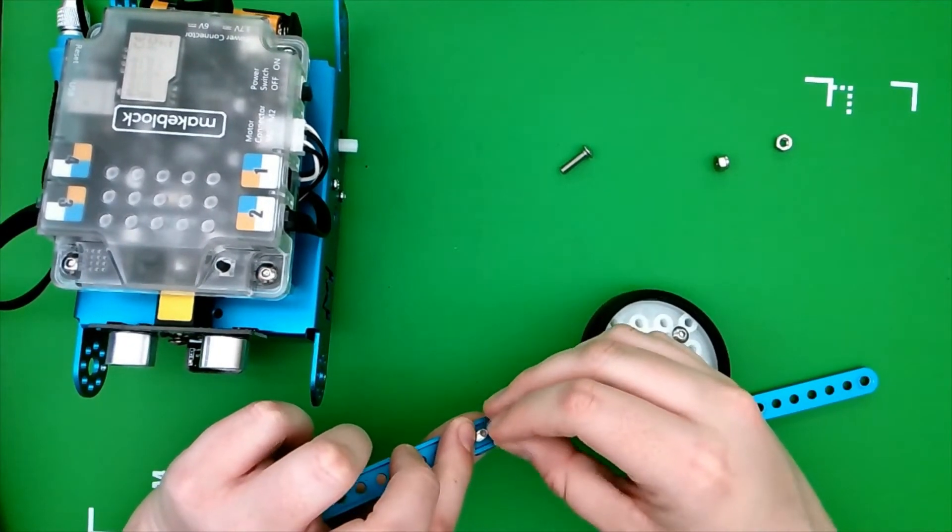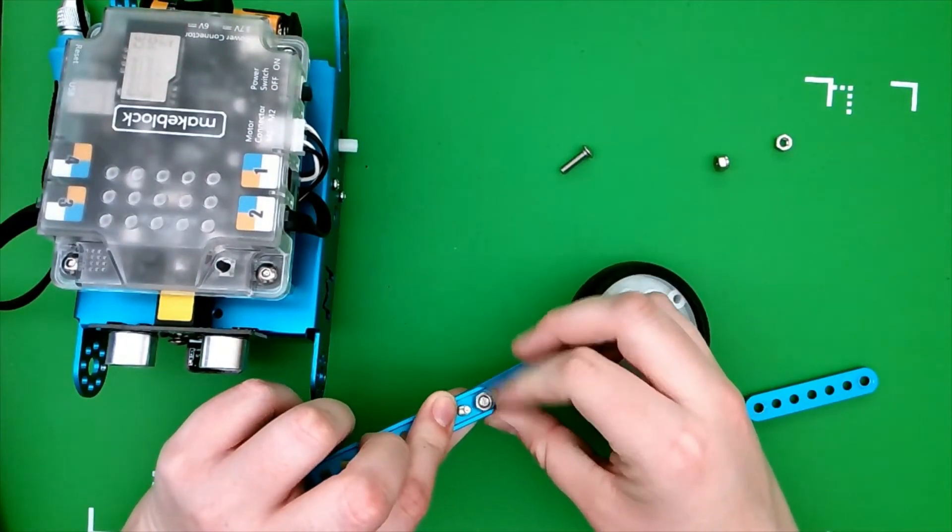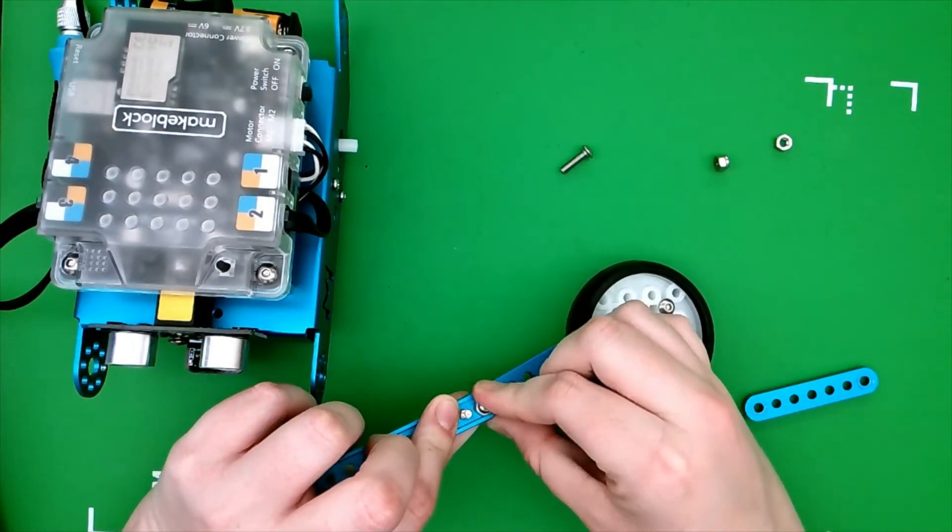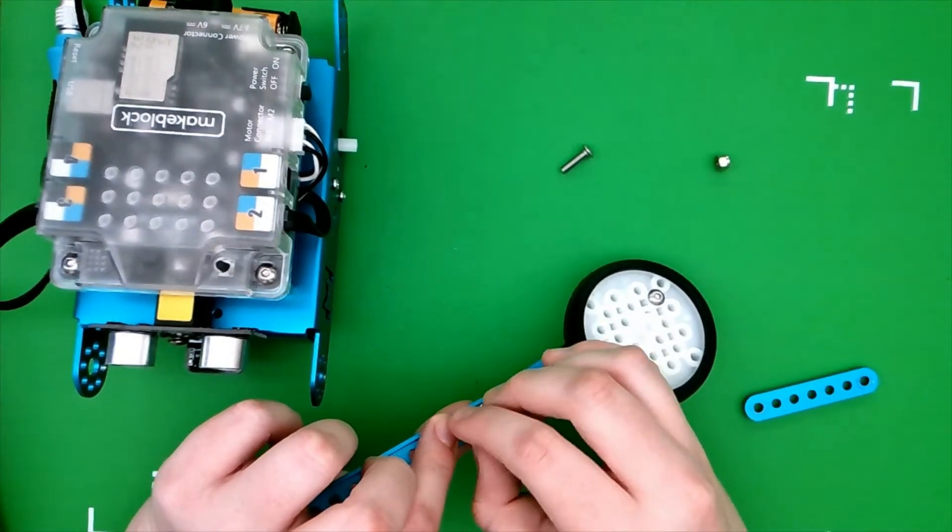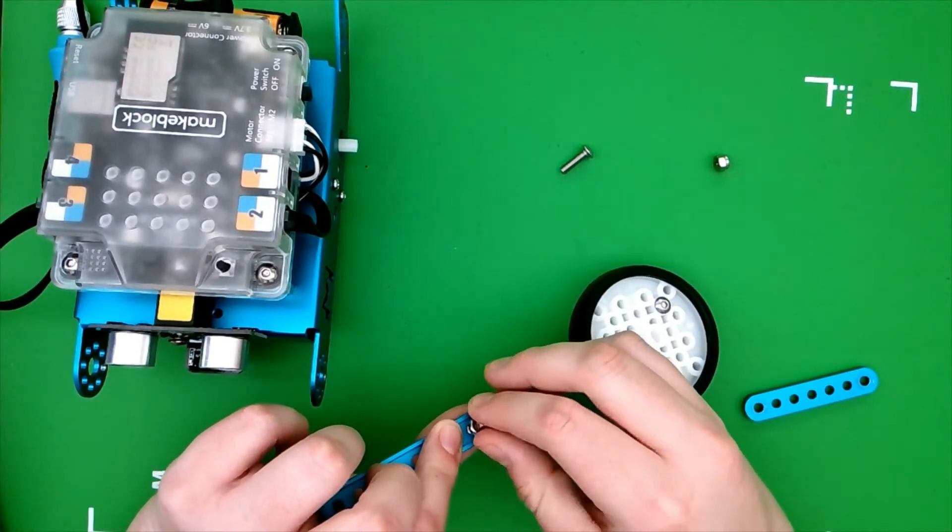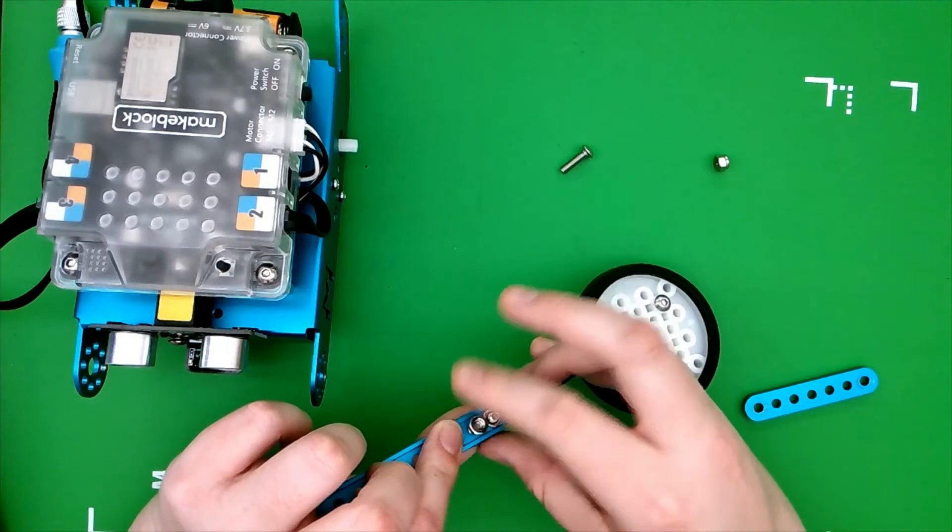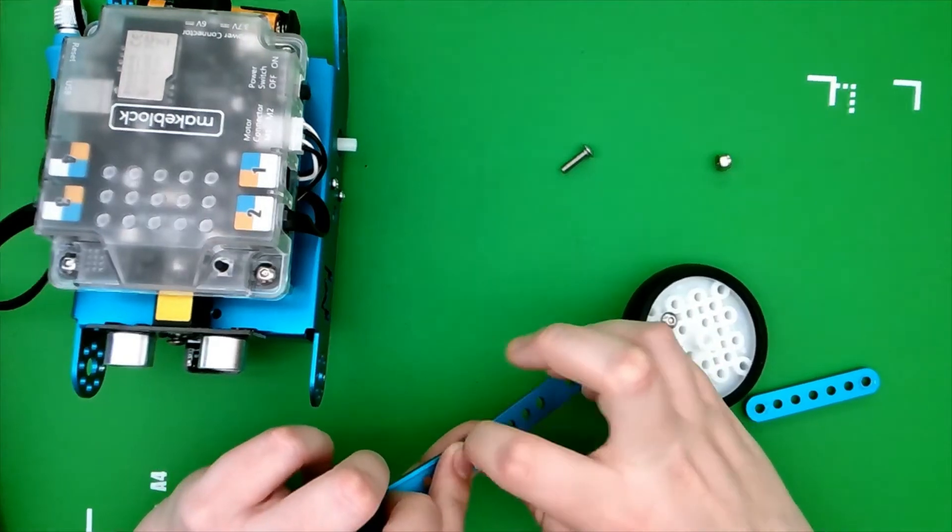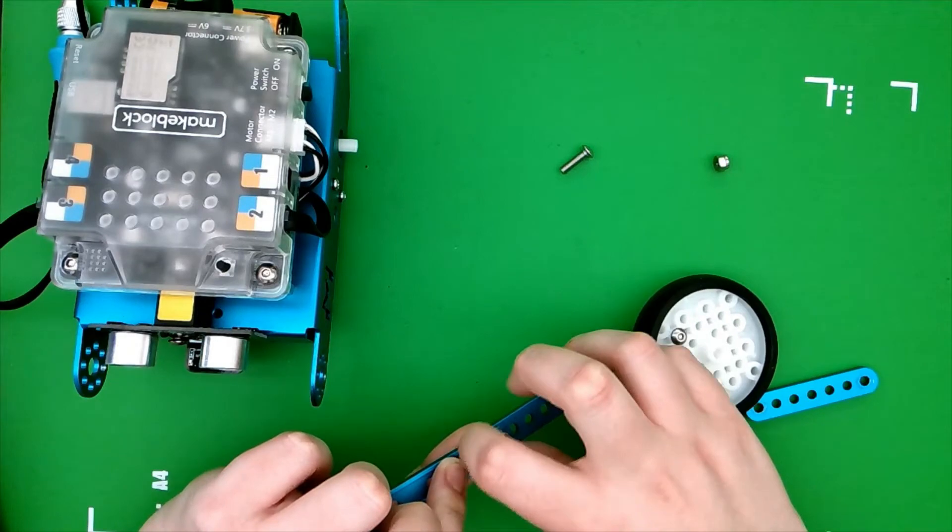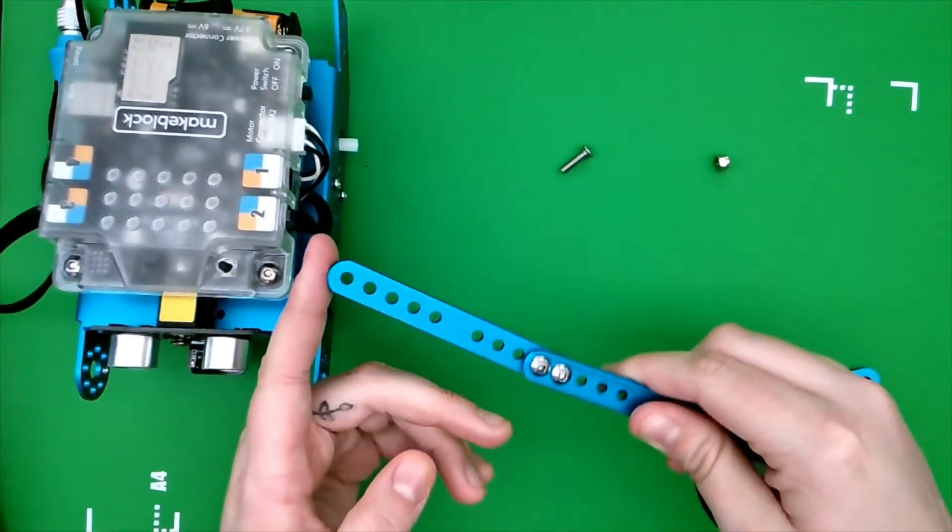And then you're going to take the two regular nuts and twist this on there. For this one again you probably don't need the screwdriver or the wrench. It should screw on there pretty easily. It should be about like that.